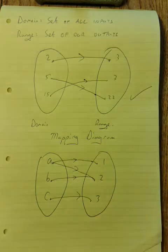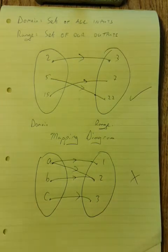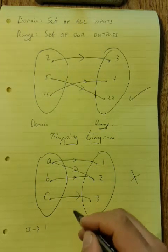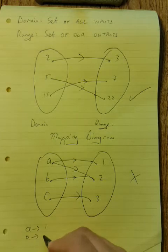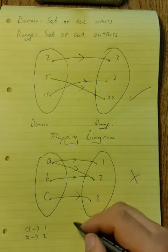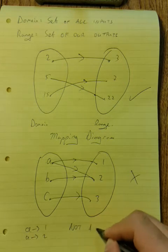Let's look at another mapping diagram. Now this here is not a function. Why? Because in this mapping diagram, a goes to 1, but a also goes to 2. So we have one input and we have two outputs. Therefore, it is not a function.